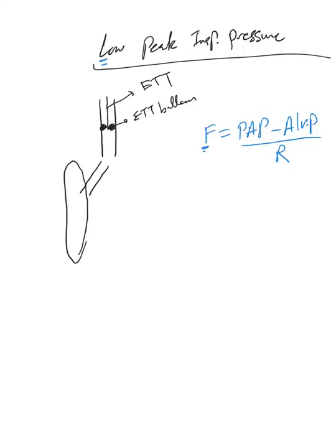Flow is equivalent to proximal airway pressure minus alveolar pressure divided by resistance. If somebody is using a flow target, and during the inspiratory cycle while the ventilator is delivering the target flow, the patient initiated or tried to initiate a breath...